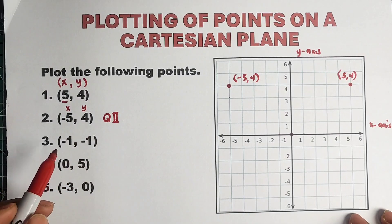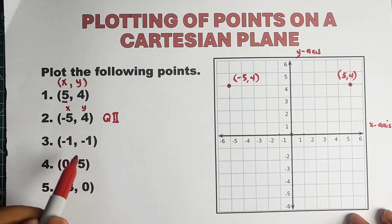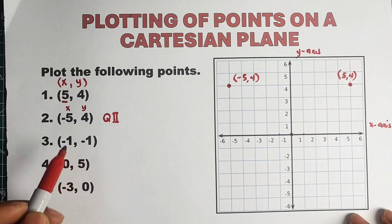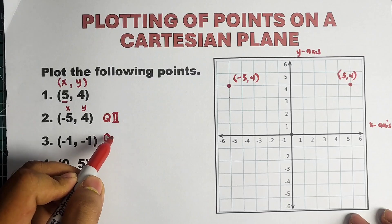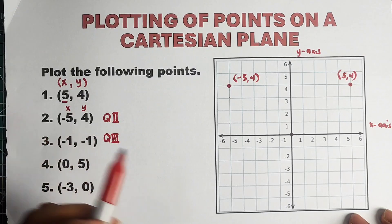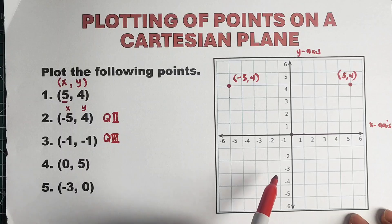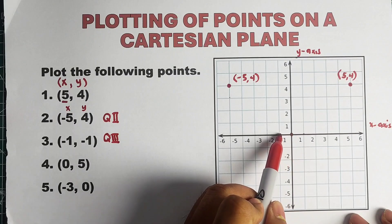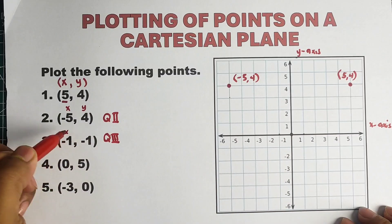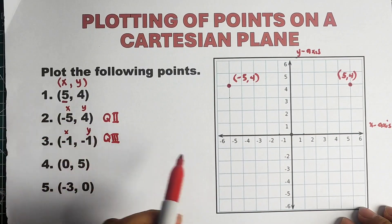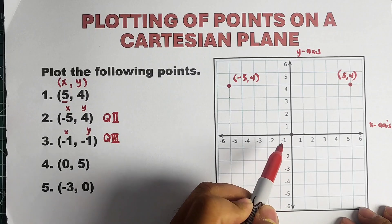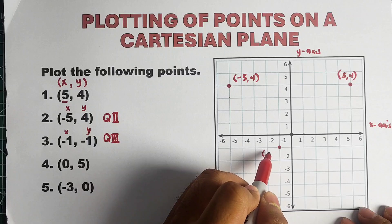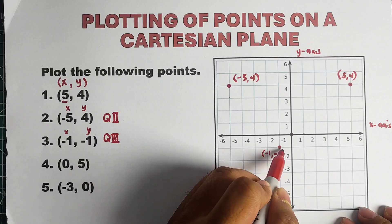Now let's move on with number 3. This one is negative 1, negative 1. Since both coordinates are negative, it is located at the third quadrant. So, how are we going to plot that? From the origin, since x is negative 1, we move 1 unit to the left. And for the y-value, that is also negative, so we move 1 unit down. And this is the location of your third ordered pair, negative 1, negative 1.